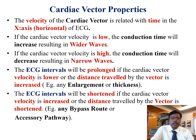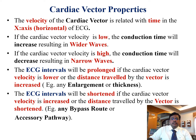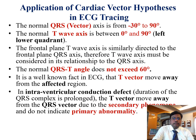Cardiac vector properties: the velocity of the cardiac vector is related with time on the x-axis of ECG. If the cardiac vector velocity is low, conduction time increases, resulting in wider waves. If the velocity is high, conduction time decreases, resulting in narrow waves. ECG intervals will be prolonged if the cardiac vector velocity is lower or the distance traveled by the vector is increased — for example, any enlargement or thickness. ECG intervals will be shortened if the cardiac vector velocity is increased or the distance is shortened — for example, any bypass route or accessory pathway.